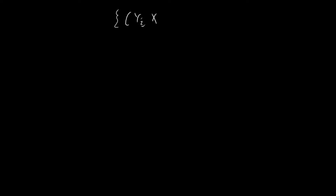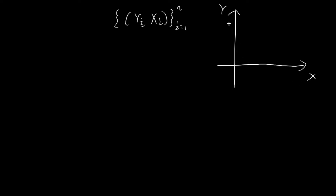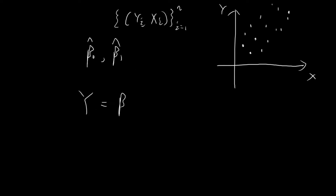So what exactly is the RSS? First, let us consider the collection of n data points that we have gathered, which we can plot on an xy plane. Once we've collected all of this data, we can construct estimates for β₀ and β₁. Taking these two values, I can draw a line y = β̂₀ + β̂₁x that runs through the data, with intercept β̂₀ and slope β̂₁.